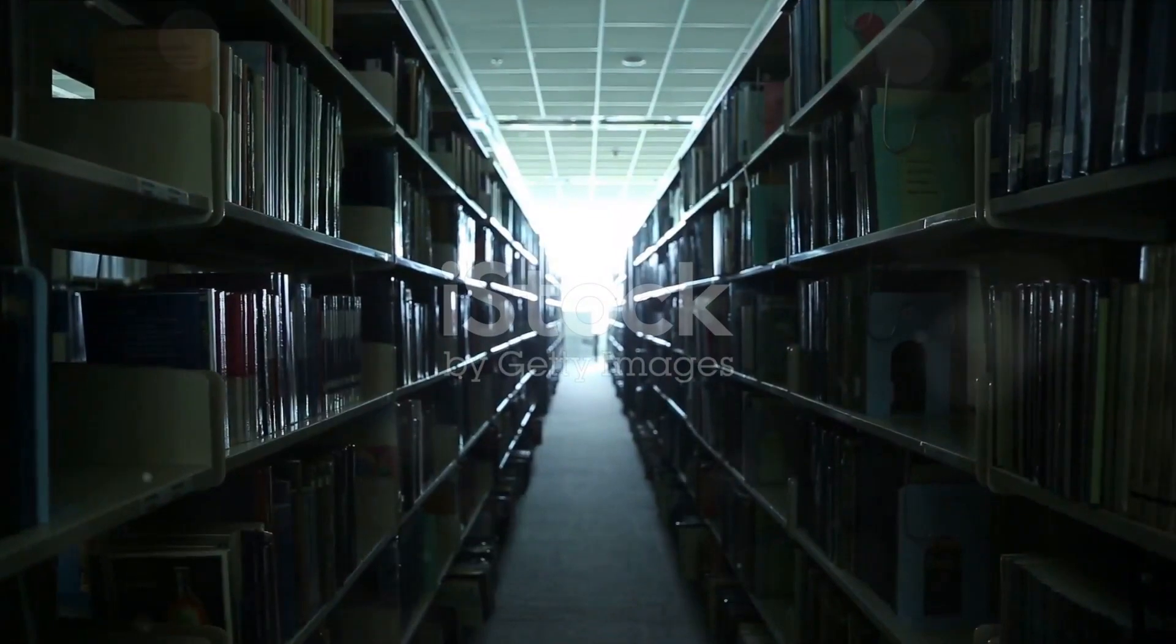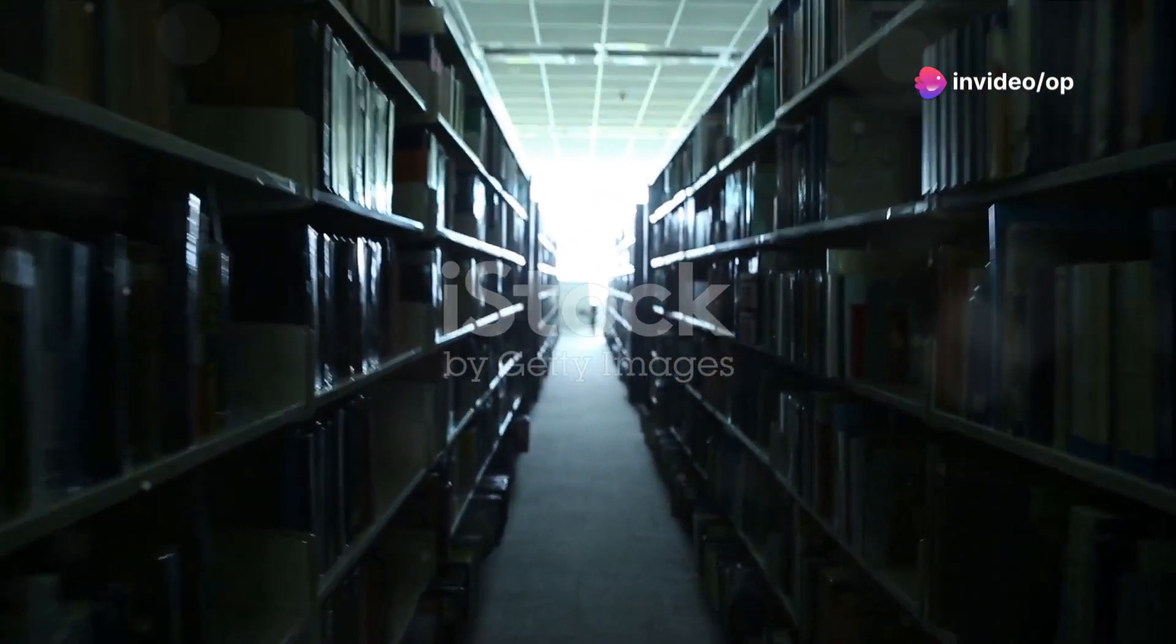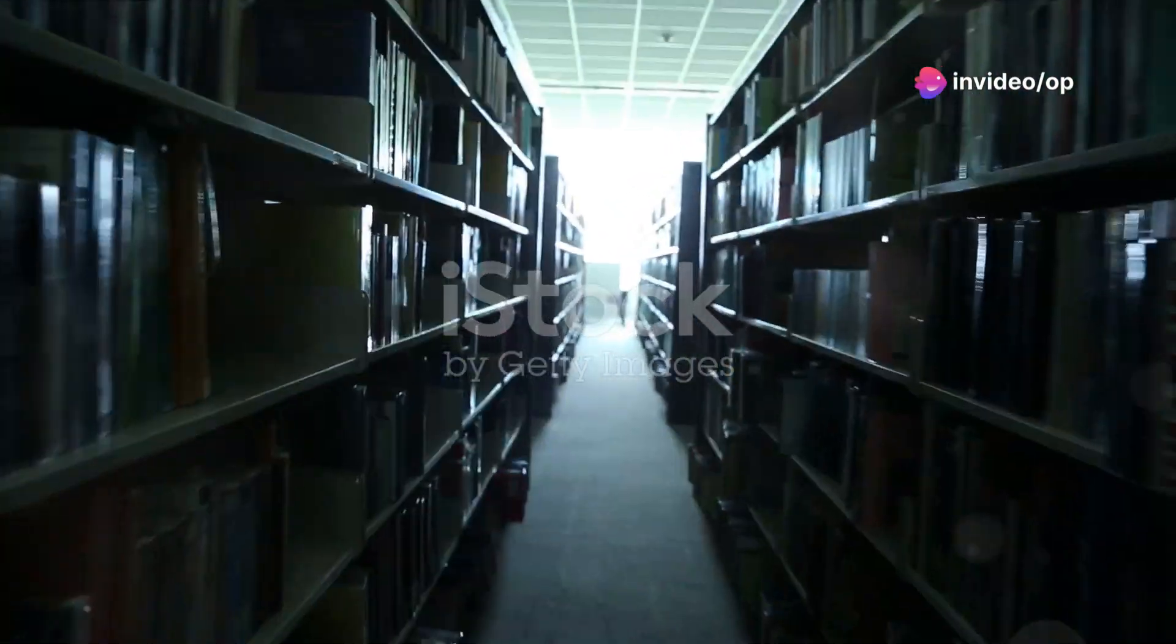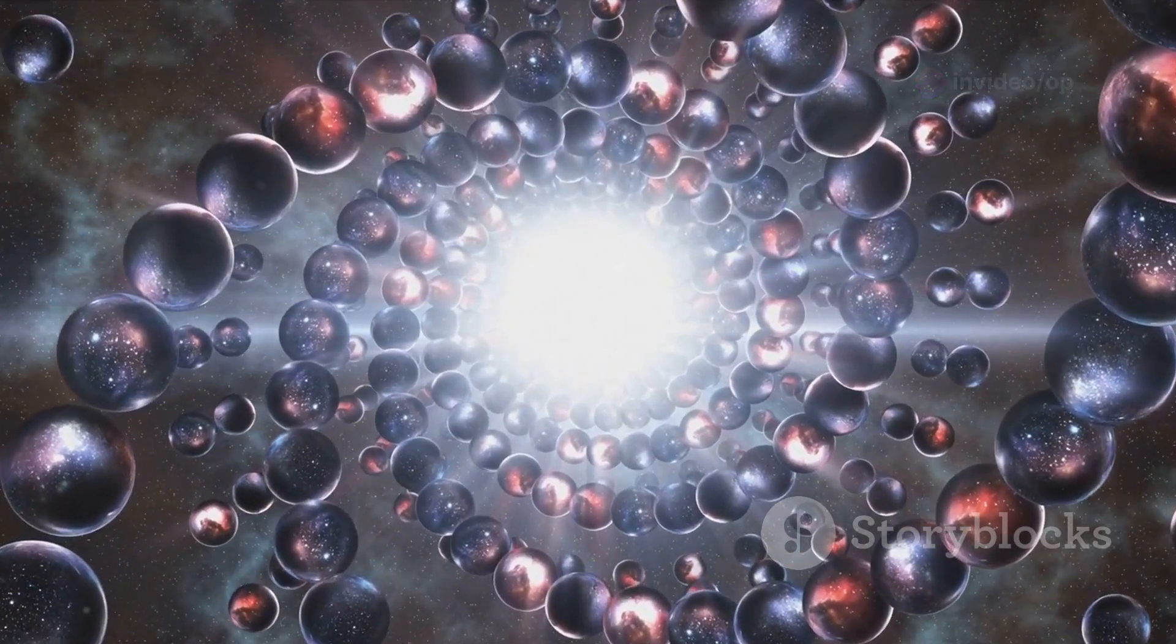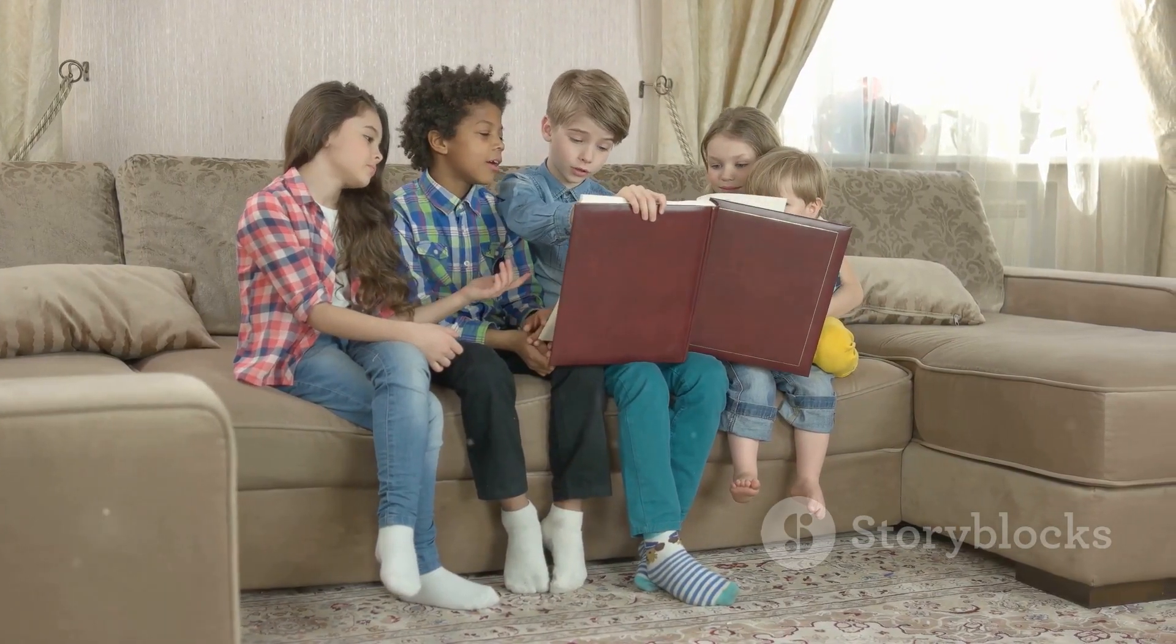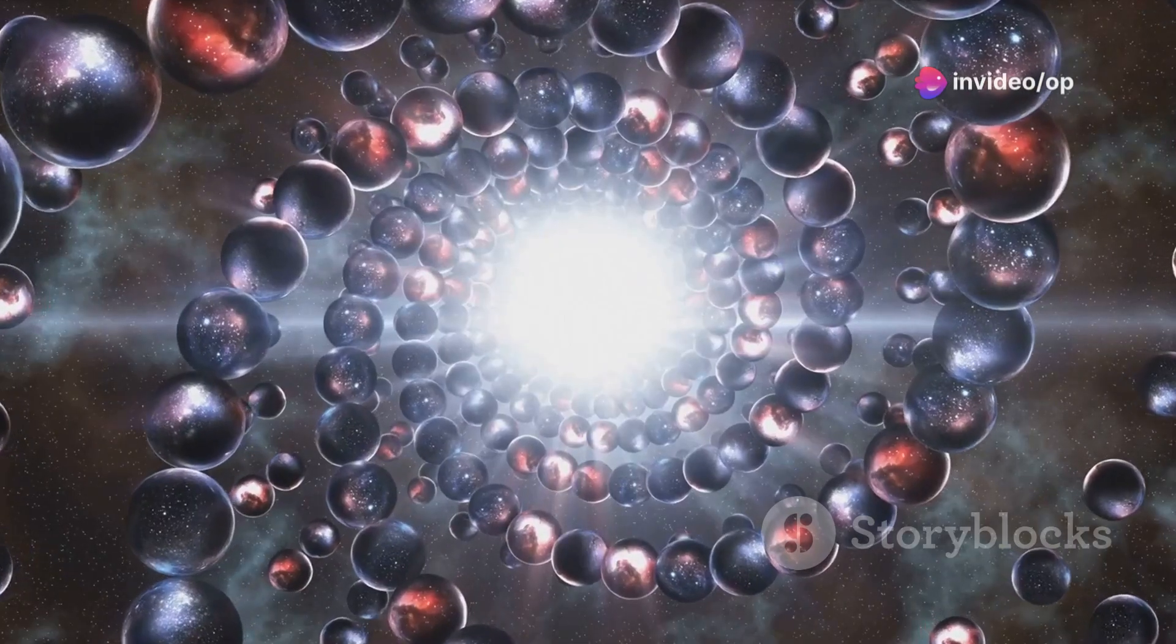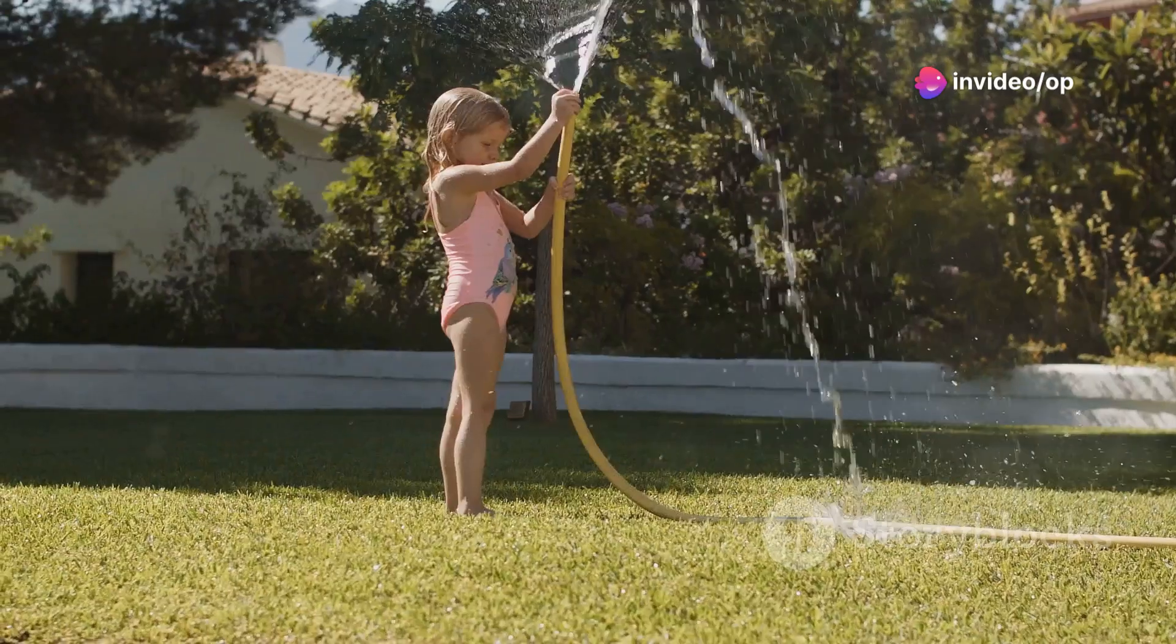Imagine if our universe were akin to a sheet of paper in a vast library of books. Each page represents a different brain or universe with its own unique story. This analogy helps simplify the complex concept of brain worlds, making it more accessible. Just as characters in a book are unaware of readers or other books, we might be unaware of other universes existing alongside ours.